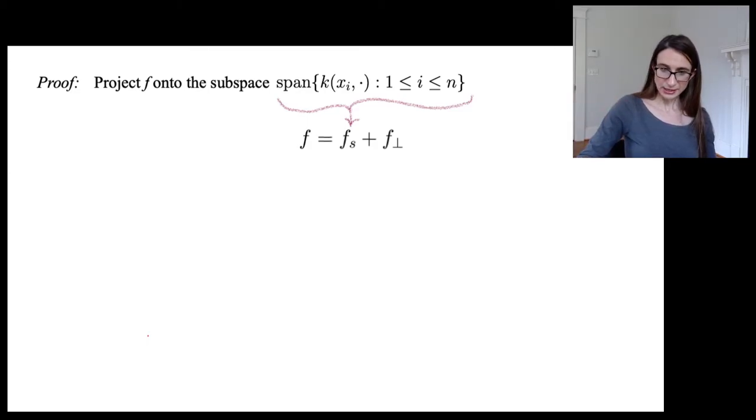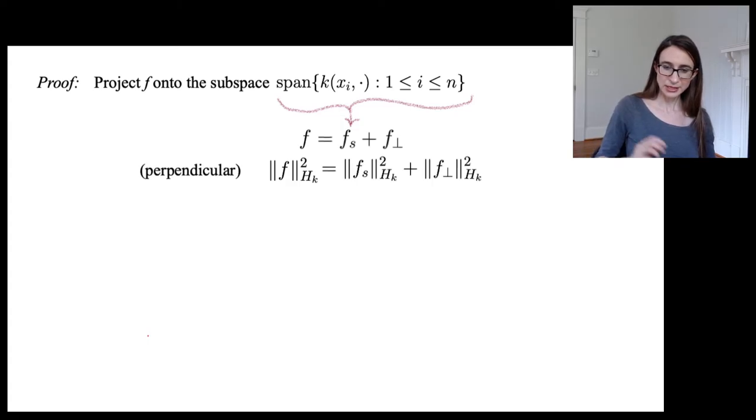Okay, so once we do that, then if we compute the norm of f squared, it's actually the sum of the norms of both of them squared. And of course, that simply comes from the fact that we defined the two pieces to be perpendicular so that the cross term is zero in that norm squared.